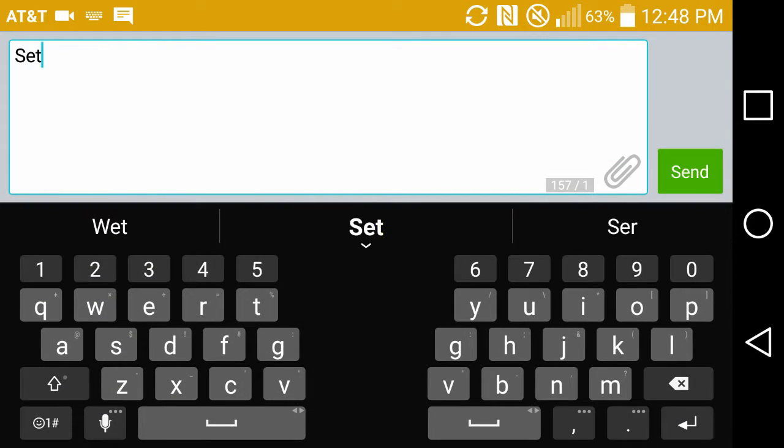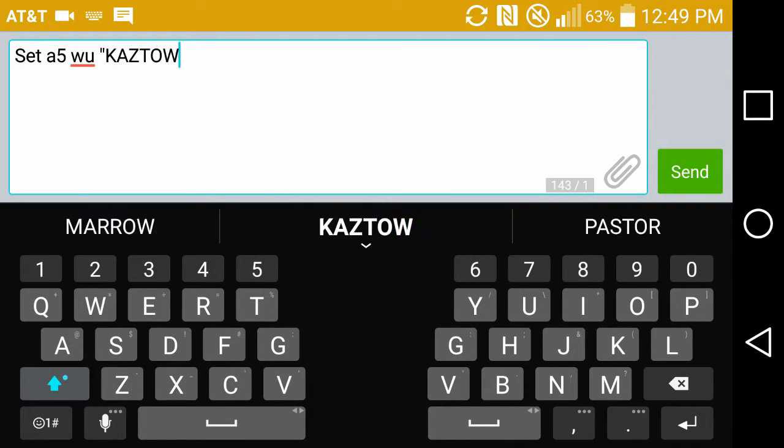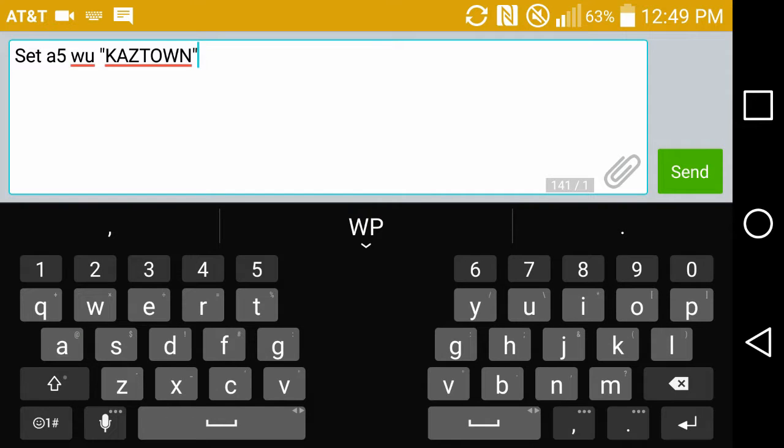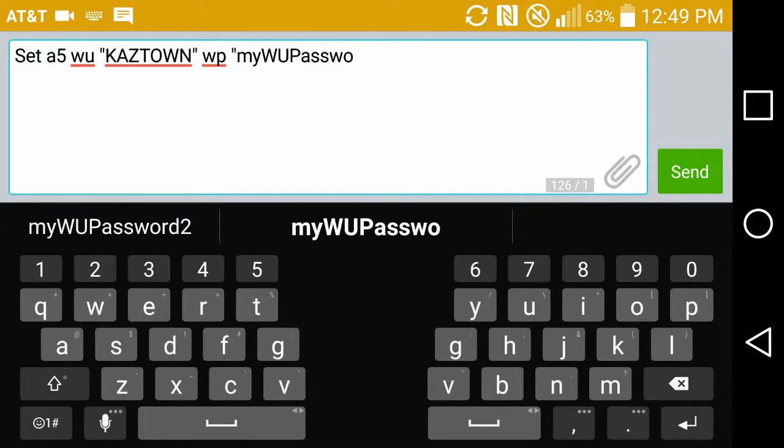Weather underground parameters are sent using the set command followed by A5, which is a password. WU indicates the weather underground station ID, which is enclosed in quote marks. WP is the weather underground account password. WR is the weather underground report rate. In this case, number 1 is set for a 10 minute interval.